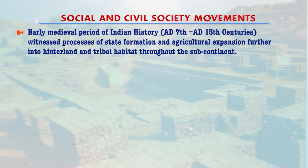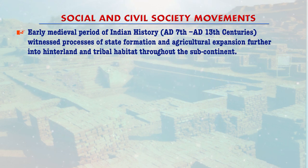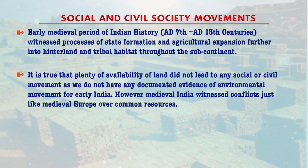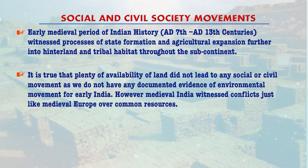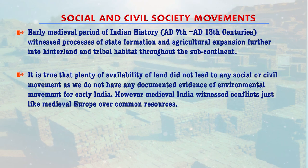The early medieval period of Indian history — that is the 7th to the 13th centuries — witnessed processes of state formation and agricultural expansion further into the hinterland and tribal habitats throughout the subcontinent. The plenty of available land did not lead to any social or civil movement, as we do not have any documented evidence of an environmental movement for early India.